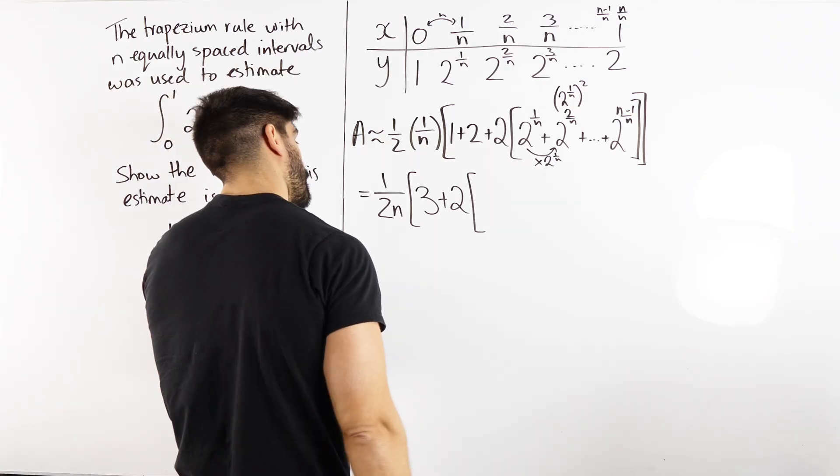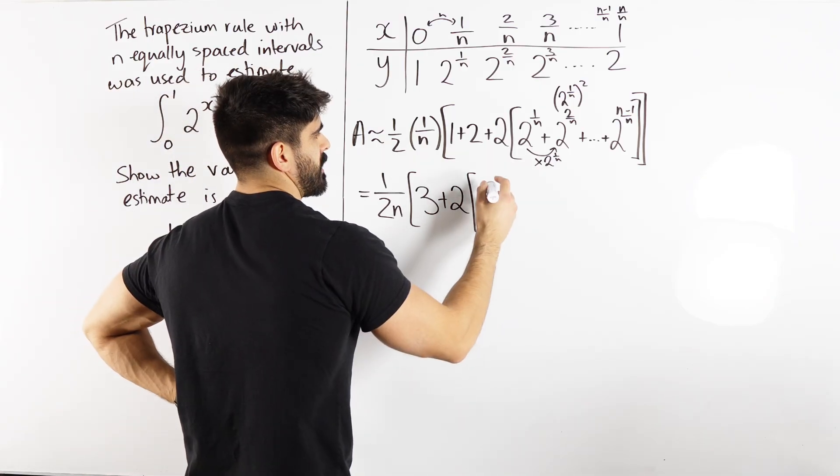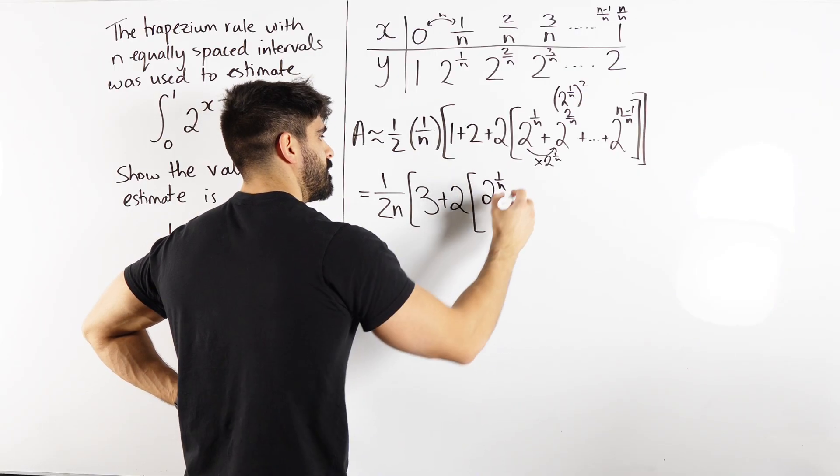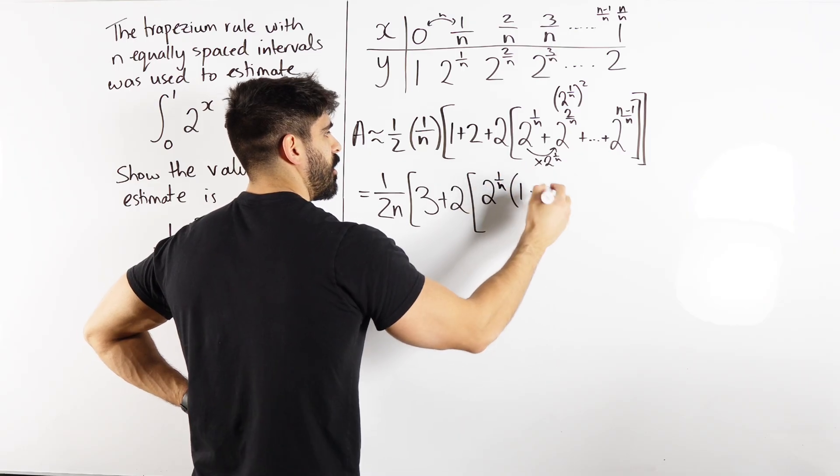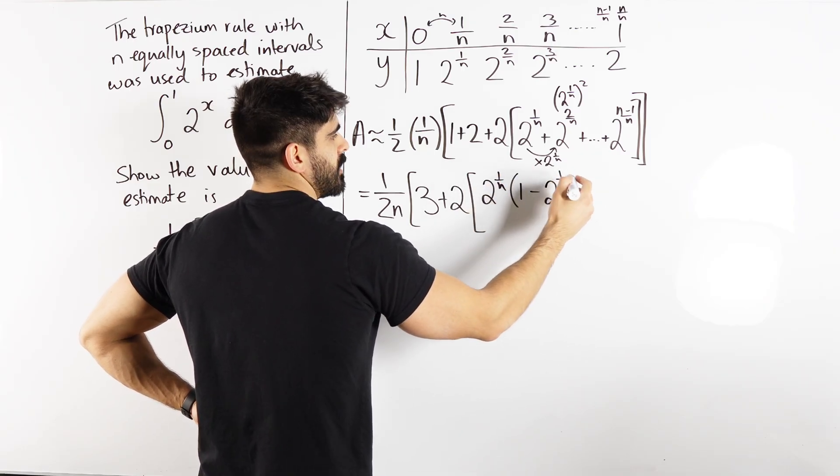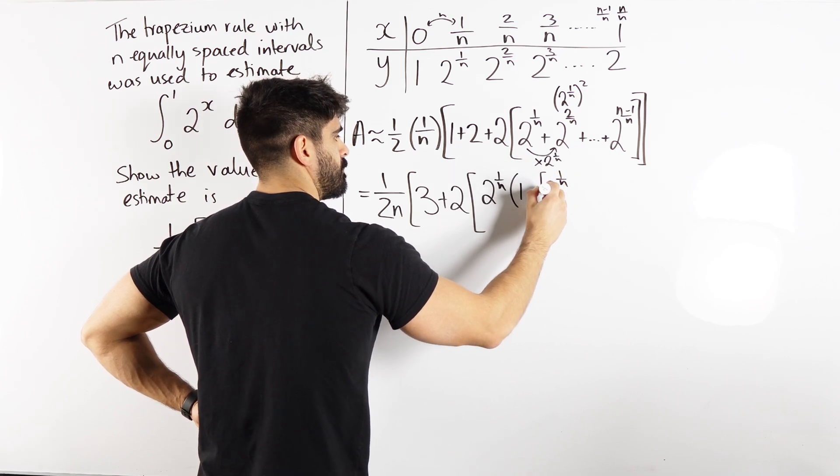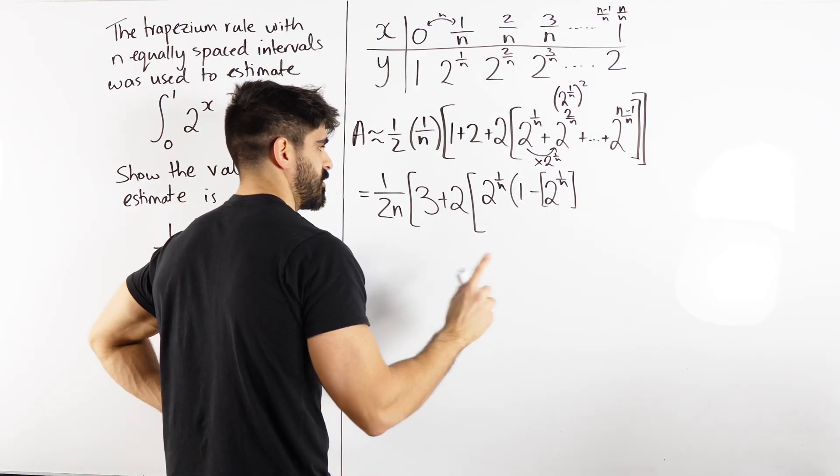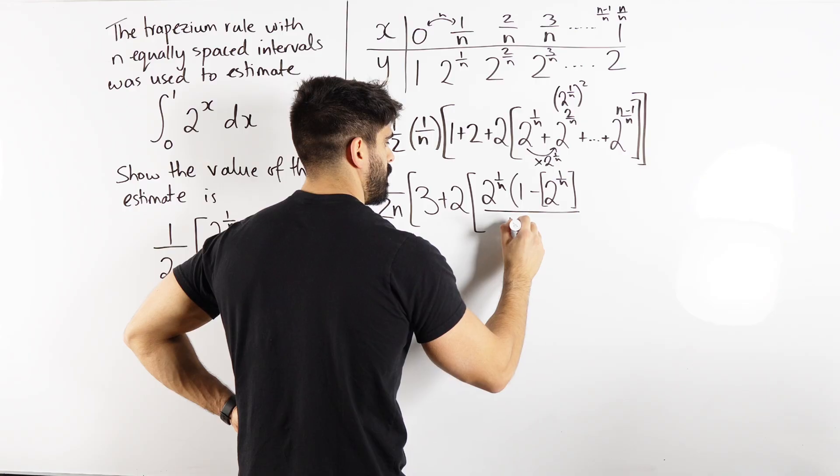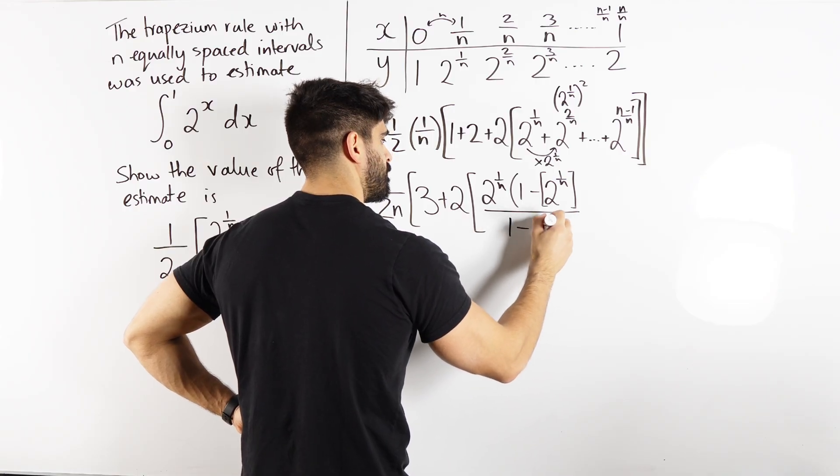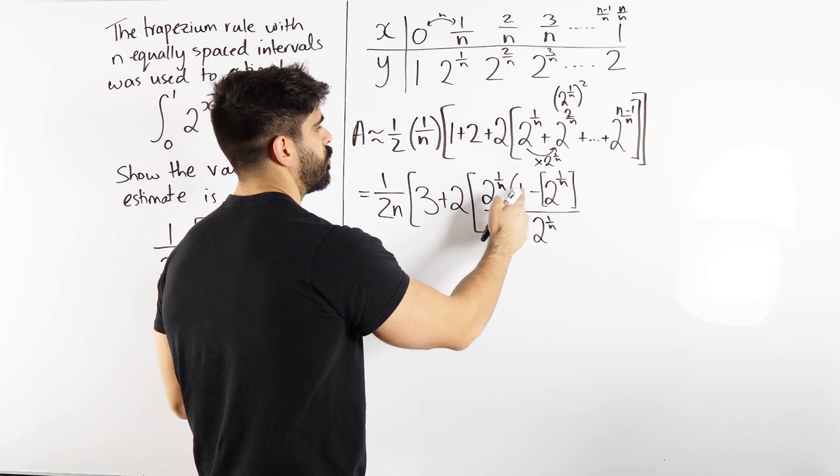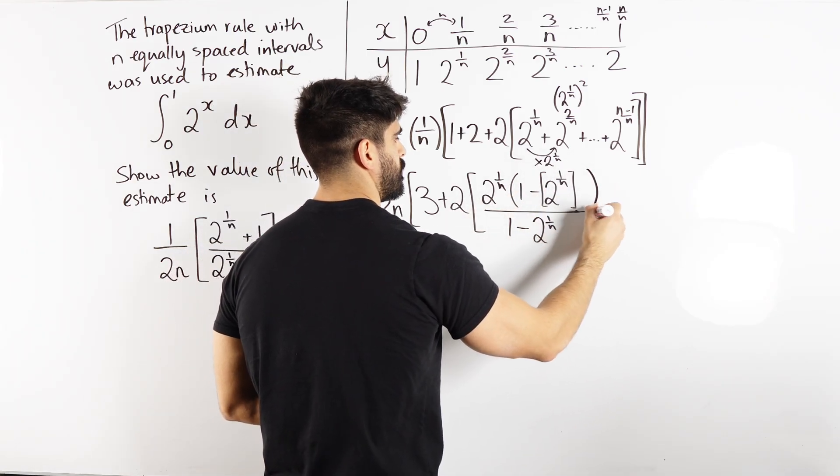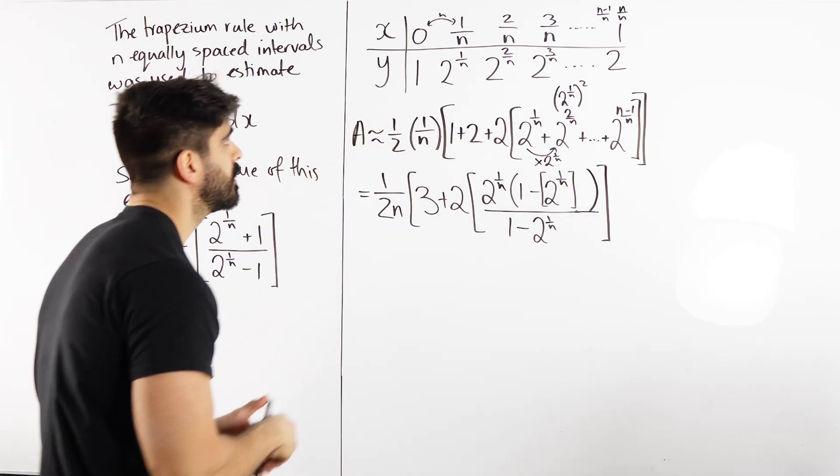So we have a, the first term, which is 2 to the power of 1 over n, times 1 minus r to the power of n. So we're going to have to figure out how many terms there is. All over 1 minus r. So a times 1 minus r to the power of n, then I'm going to close that bracket, all over 1 minus r.